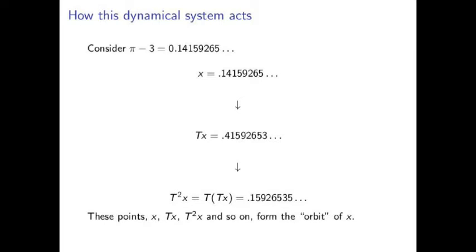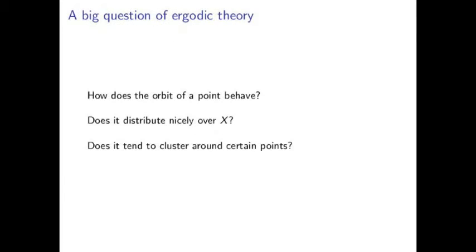As we keep applying the transformation over and over again to a point in the set, we get the orbit of that point. And so when I say that ergodic theory is the study of long-term statistical behavior, what I mean is that we're trying to understand what that orbit is going to look like. How often will it visit certain parts of the space? Will it distribute nicely or will it tend to cluster around a certain place?